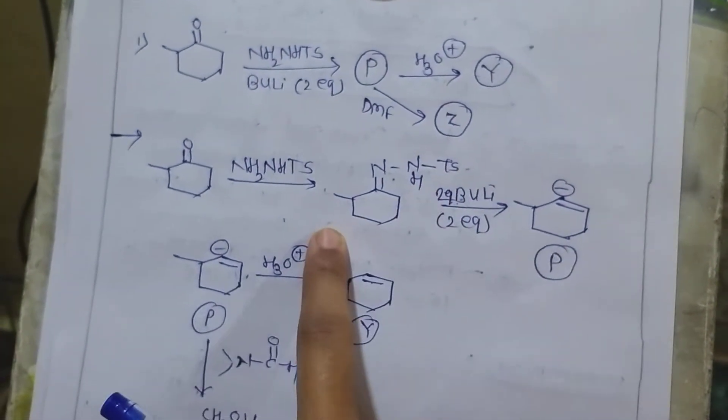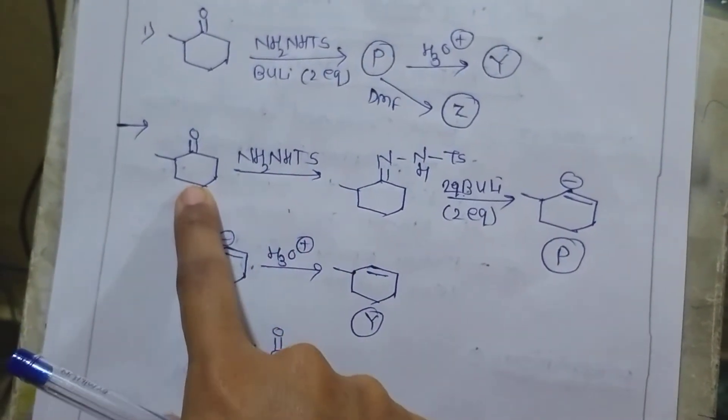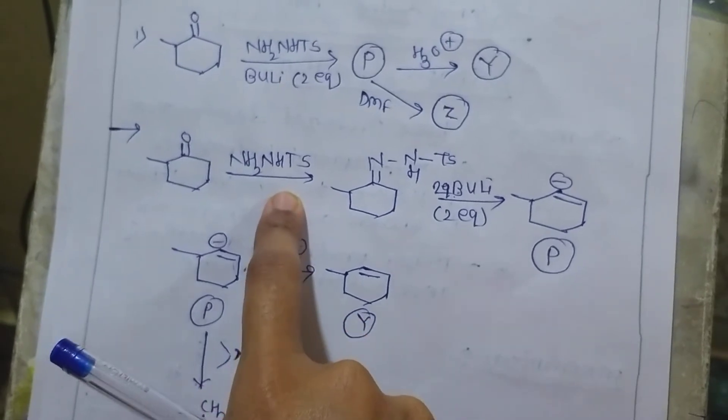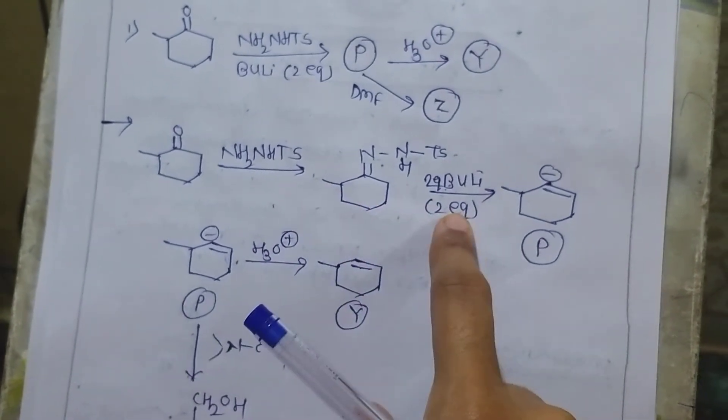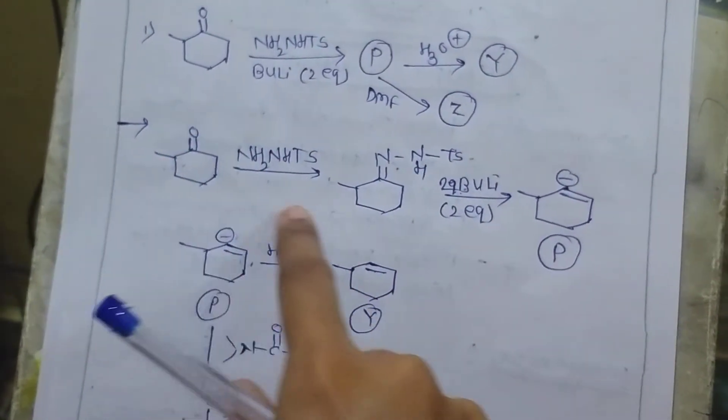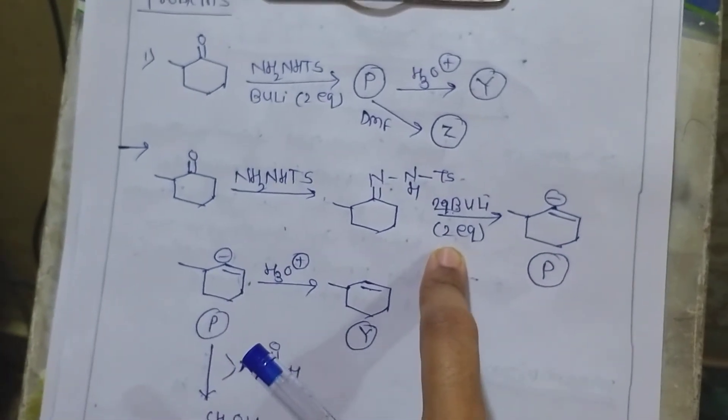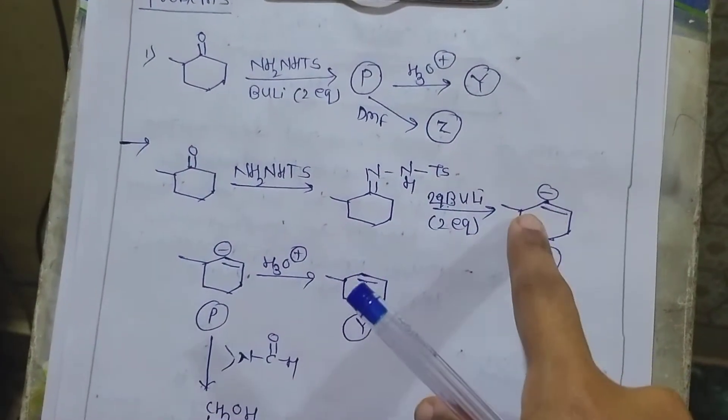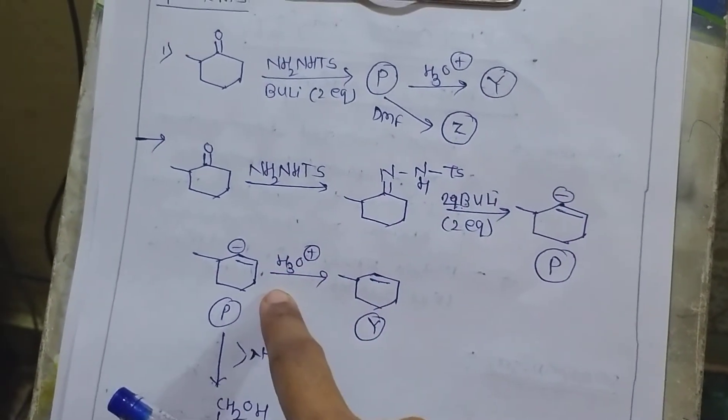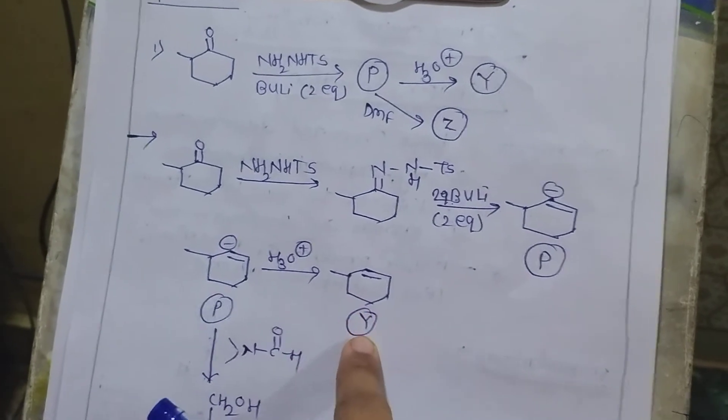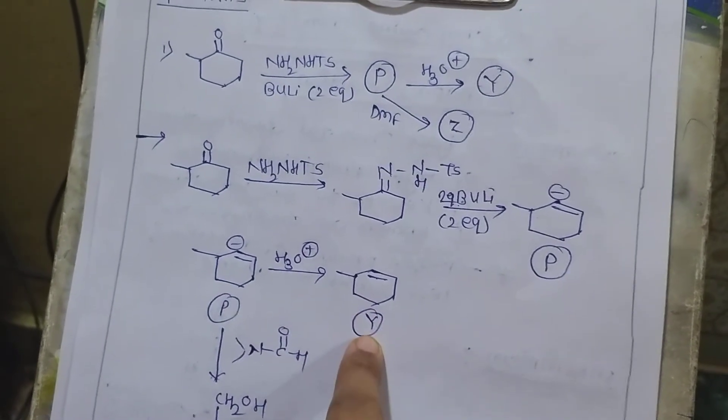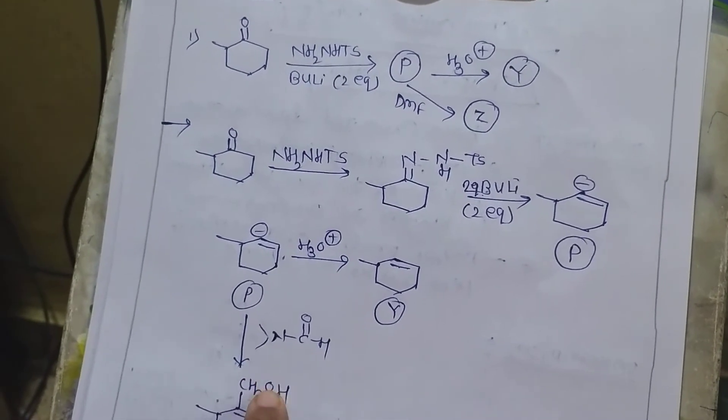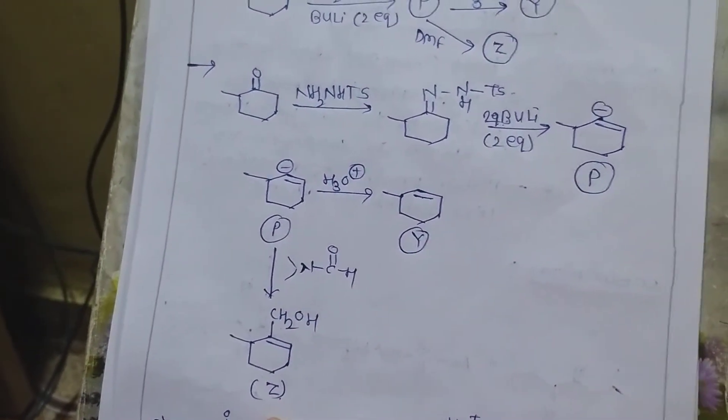Now let us see what are the products. Ketone reacts with NH2-NHTS followed by butyllithium. This is one of Shapiro reaction and we know that product of Shapiro reaction is less substituted alkene. This carbanion attacked on water molecule, it will give product Y. While it will react with DMF, dimethylformamide, it will give product Z.